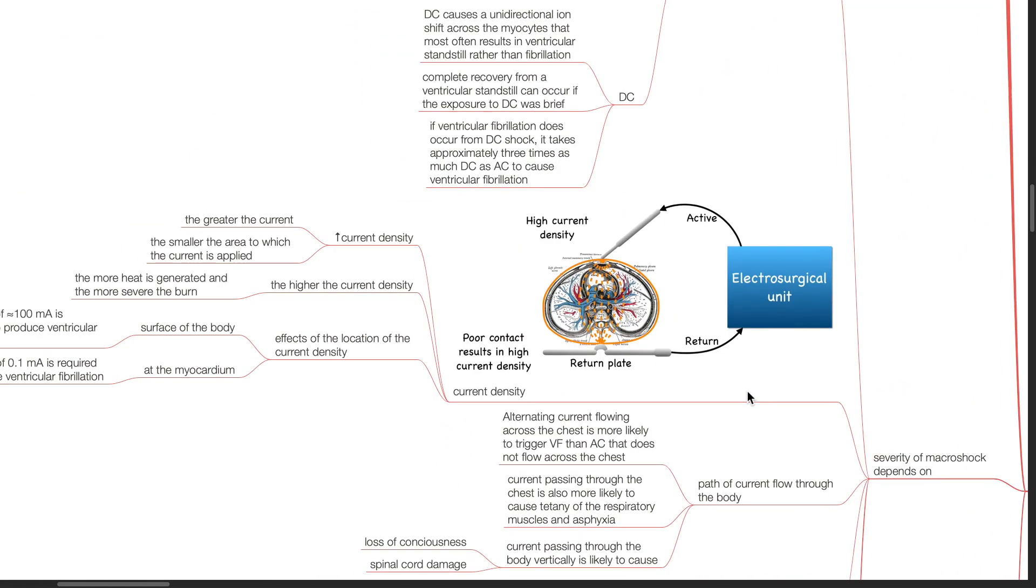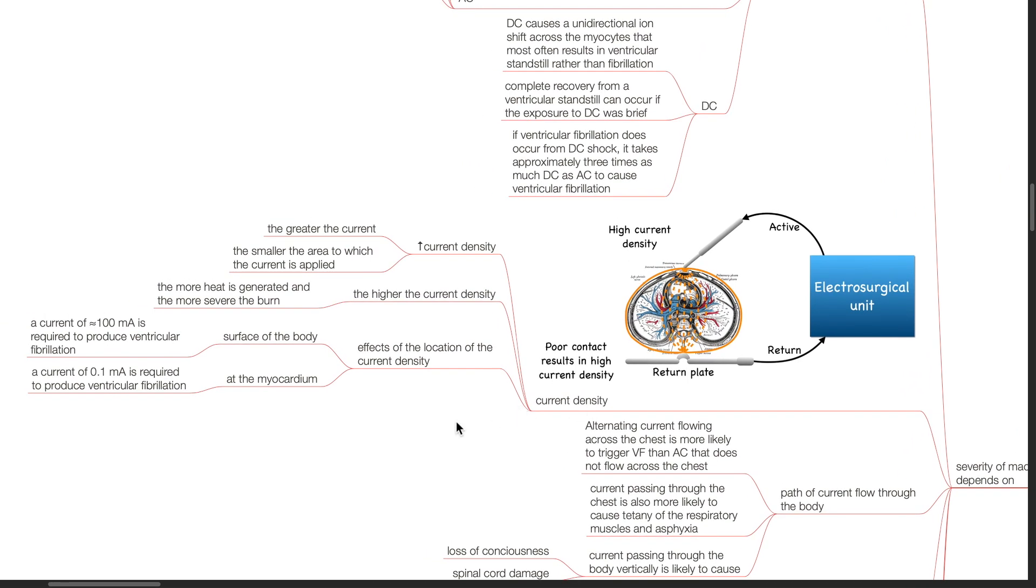Current density is increased the greater the current and the smaller the area to which the current is applied. The higher the current density, the more heat is generated and the more severe the burn. Effects of the location of current density: if it is on the surface of the body, a current of about 100 mA is required to produce ventricular fibrillation. However, if the current density is at the myocardium, only a current of 0.1 mA is required to produce ventricular fibrillation.